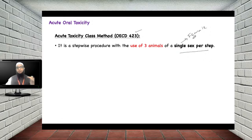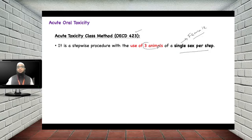The female rats used must be nulliparous — meaning they have not delivered any pups or offspring — and non-pregnant. Per step, you use three animals.